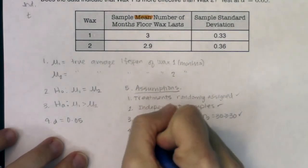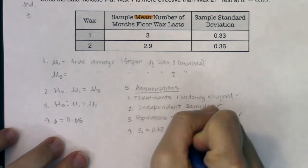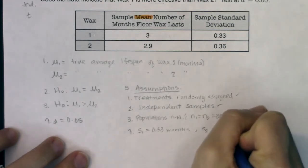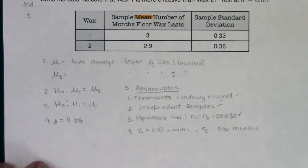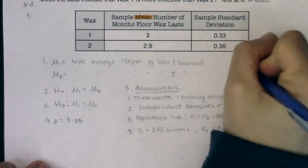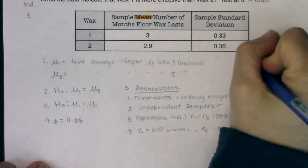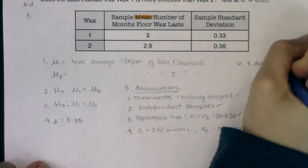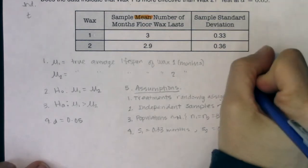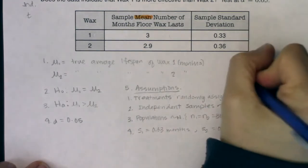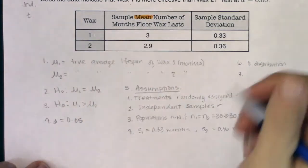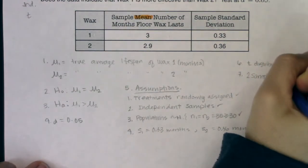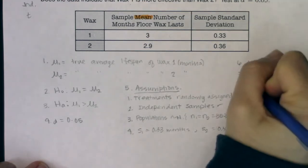Assumption four: we know s-one equals 0.33 months and s-two equals 0.36 months. As long as you know those sample standard deviations, you can run the t-test. If you happened to know the sigmas, you'd run a z-test. Step six: we're going to use the t distribution. Step seven: the test name is the two-sample mean t hypothesis test.